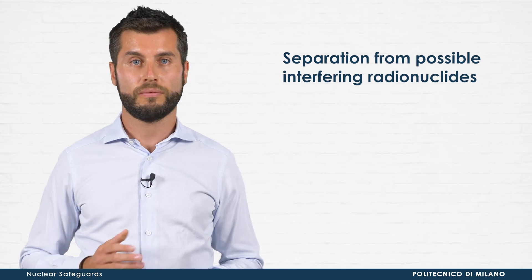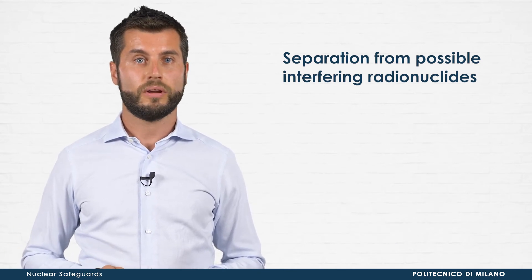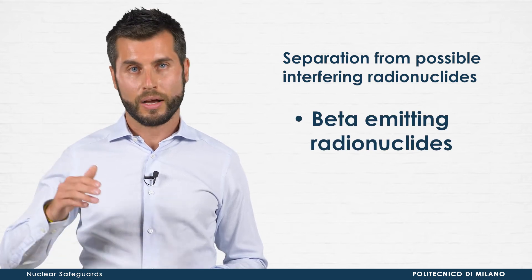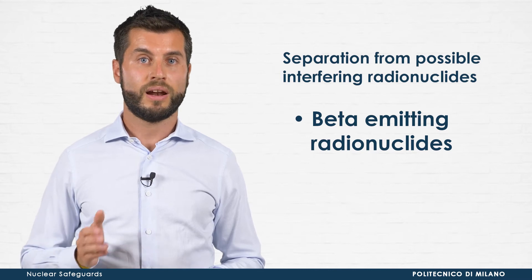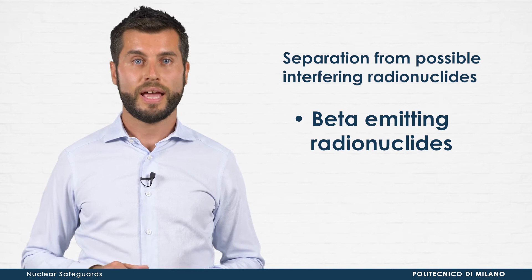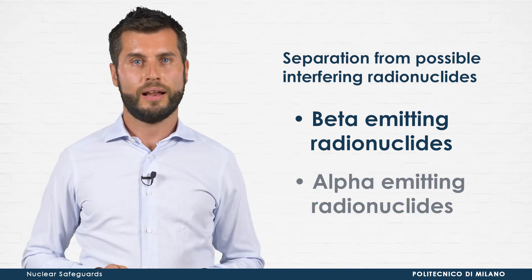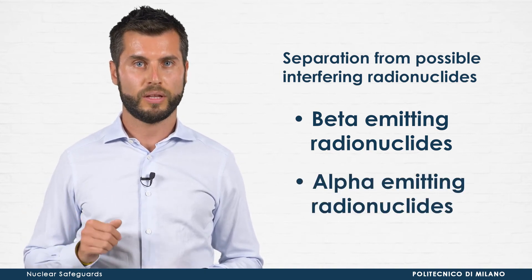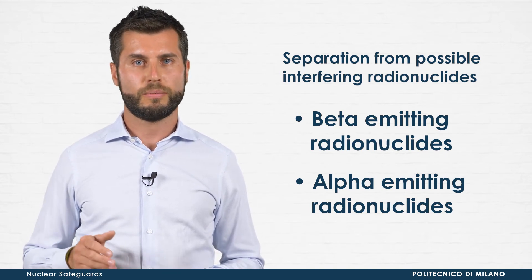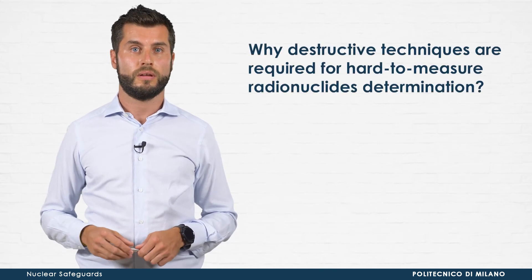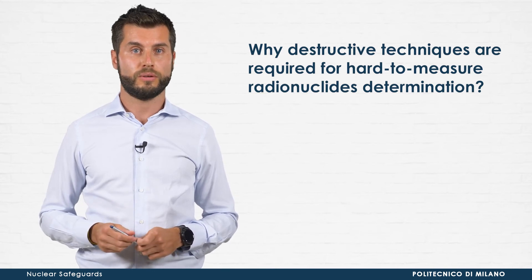Once the matrix has been removed and the analyte conveyed into a proper solution, a further step is required: separation from possible interfering radionuclides. This step is mandatory for beta-emitting radionuclides, as they show a continuum energy spectrum. If several beta-emitting radionuclides are present at the same time, the spectra would overlap, impairing the determination of the desired analyte. Also in the case of alpha-emitting radionuclides, this purification step is important to remove any possible spectral interferences during radiometric measurement. The need for interfering radionuclide separation is the second answer to why destructive techniques are required for hard-to-measure radionuclide determination.